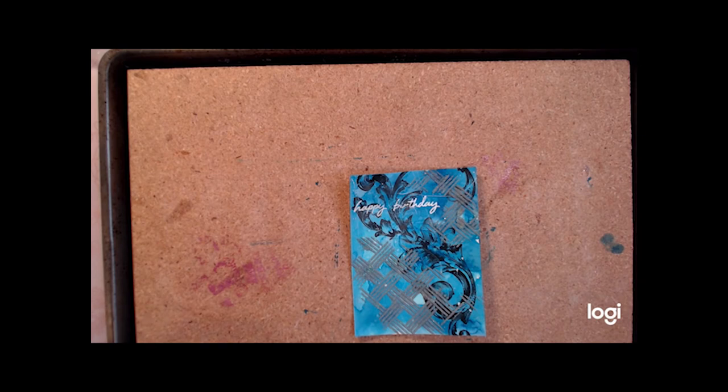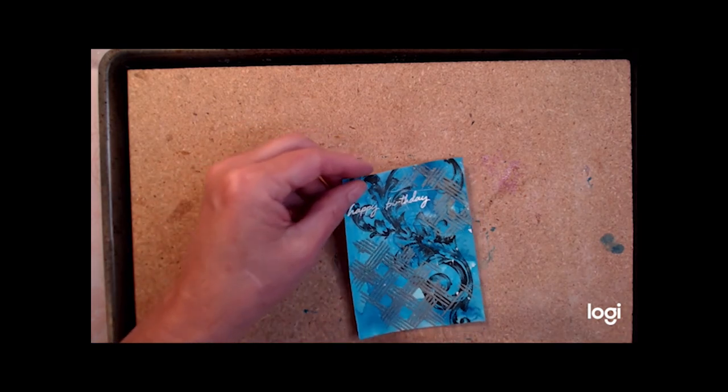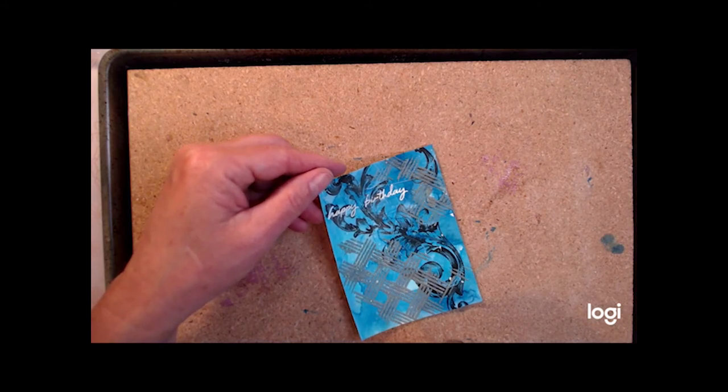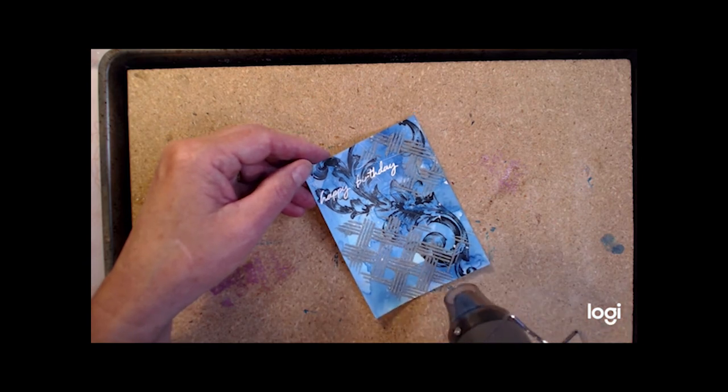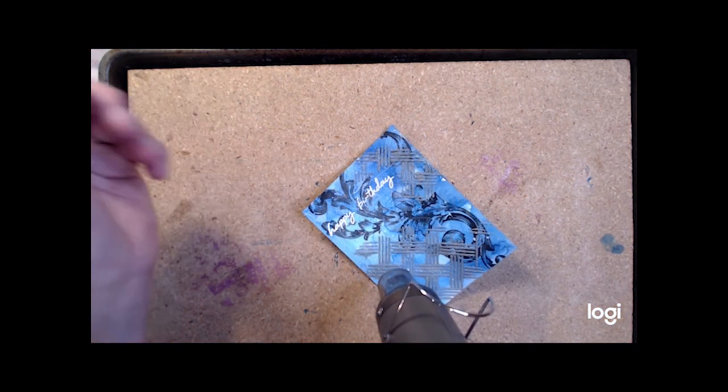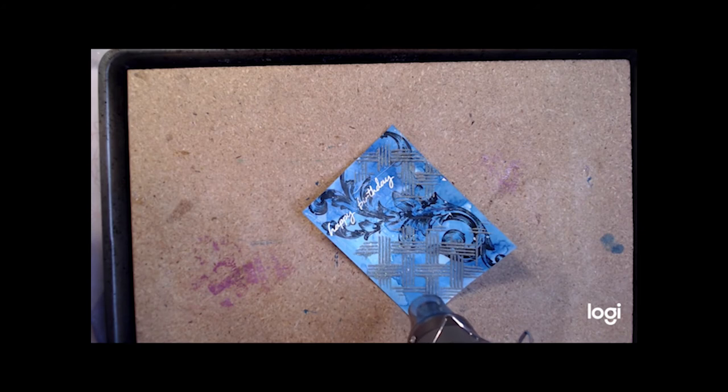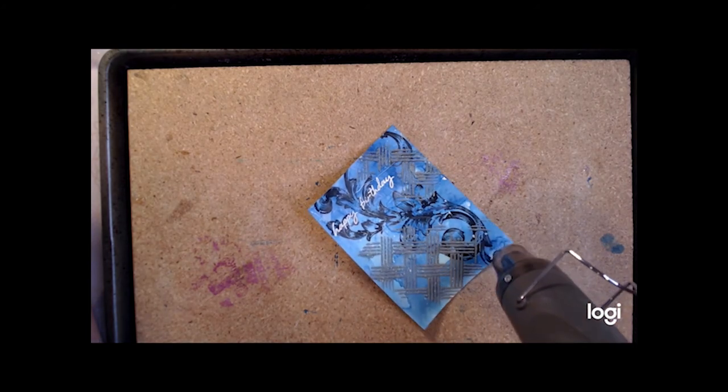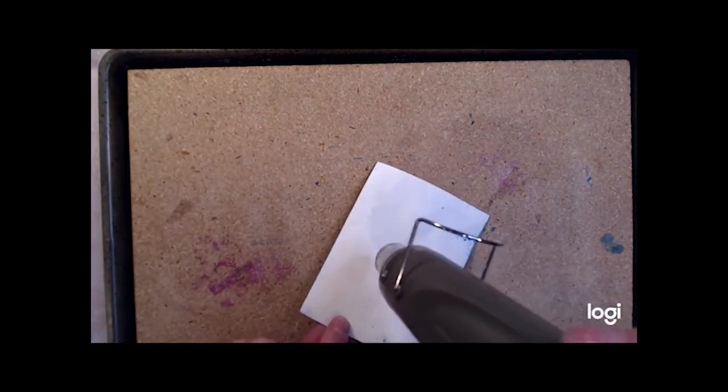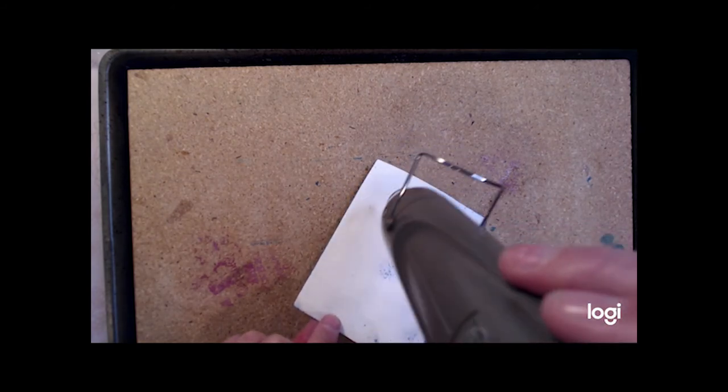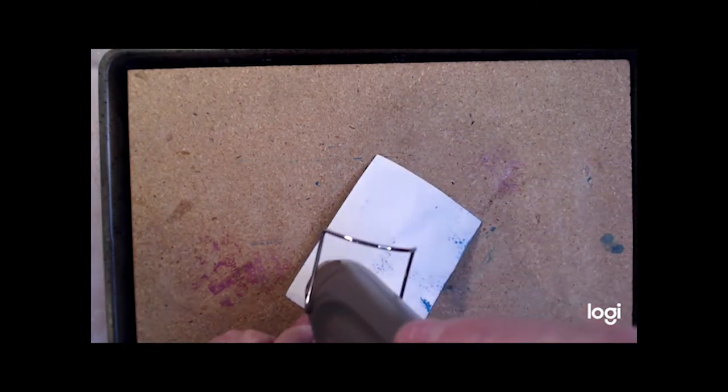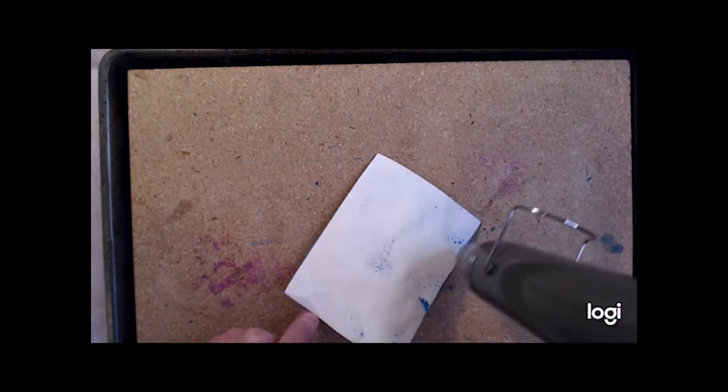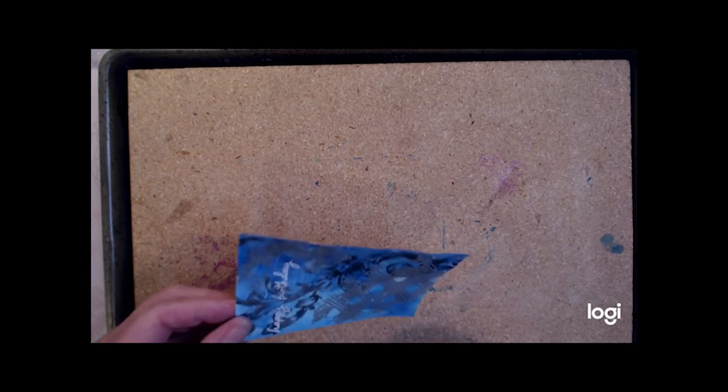I am going to heat set the embossing paste that is on the card panel. When you heat set embossing paste it bubbles a little bit. It becomes a rougher texture. Typically if you leave it to air dry for 24 hours it will have a smoother texture and the heat setting changes that. It is an interesting process. I like the texture so you can give it a try and see if that is something that you like as well. I am just going to heat the front and the back of the panel to be sure that the embossing paste is fully dry before we move on to the next part of the card.